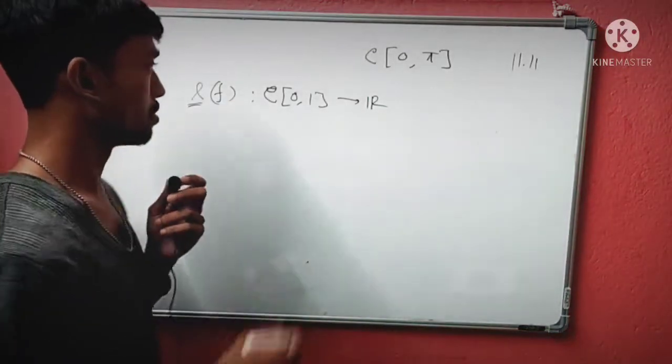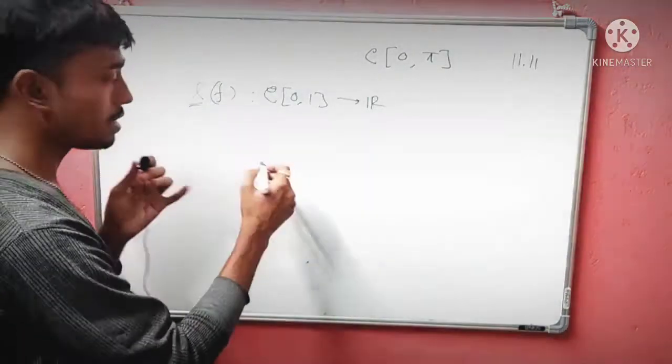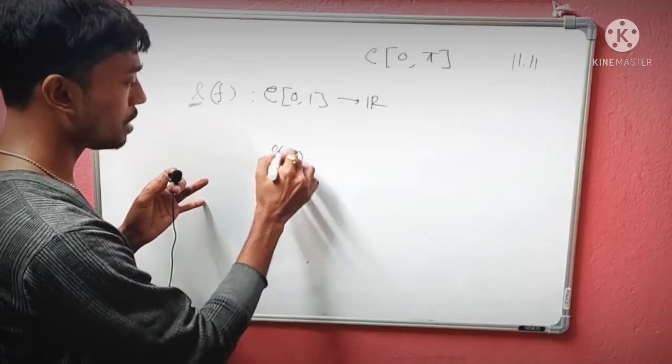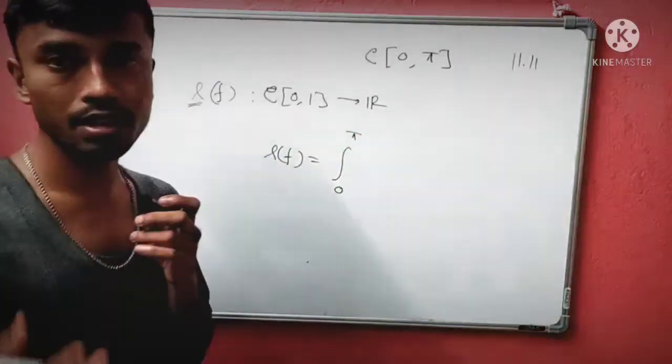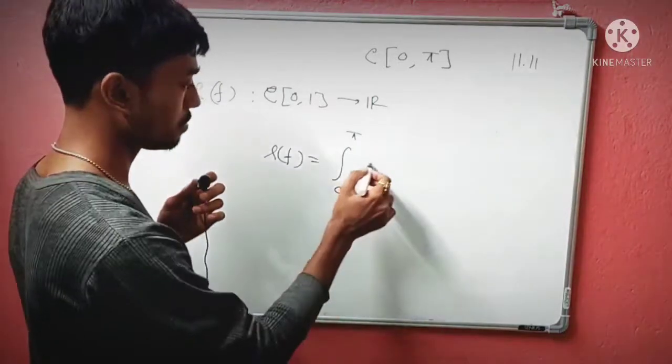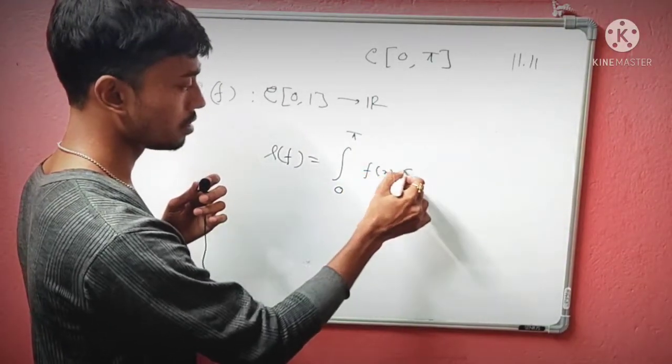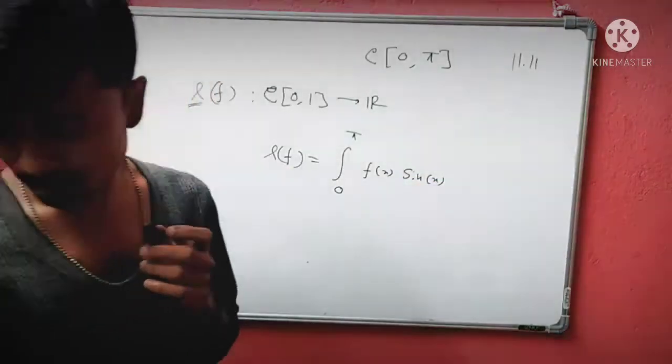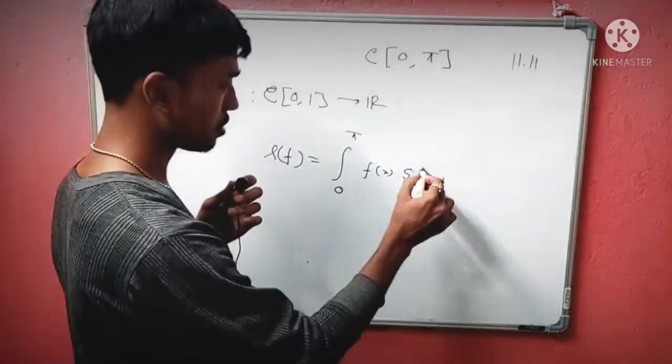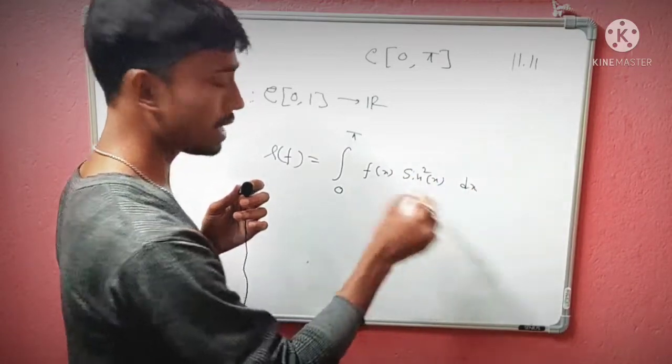The definition is L(f) = ∫₀^π f(x)sin²x dx. This is defined in the measure set or integration sense. As you can see, this is a very normal, default kind of definition.